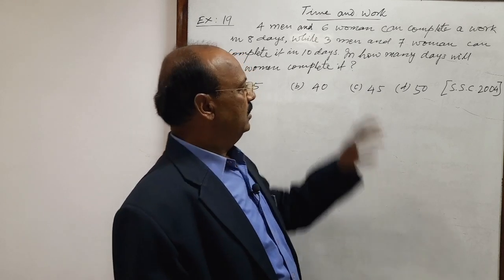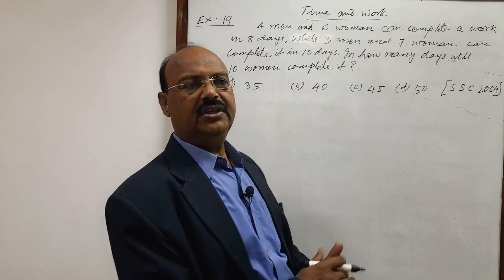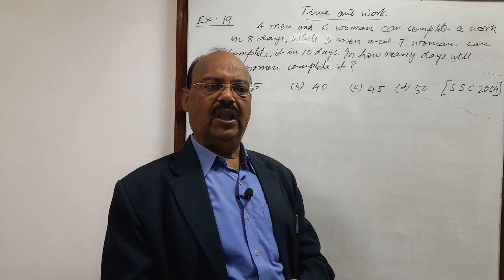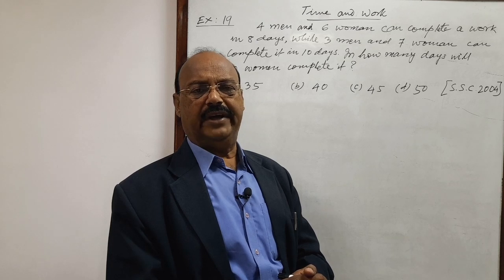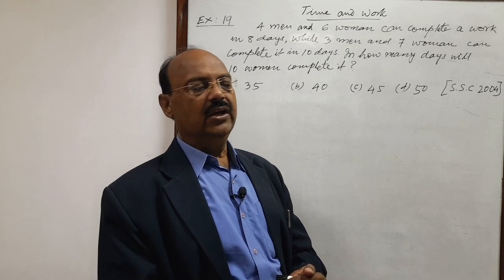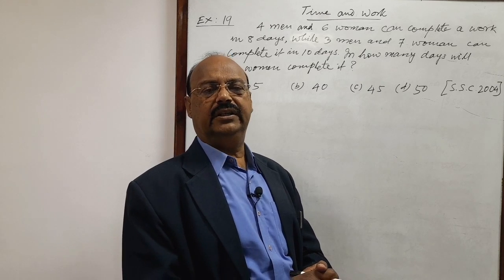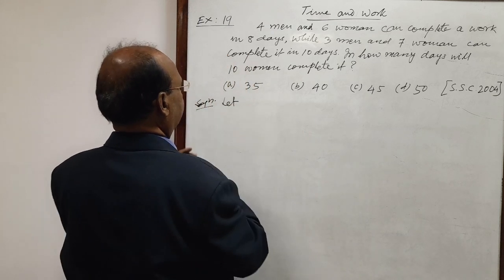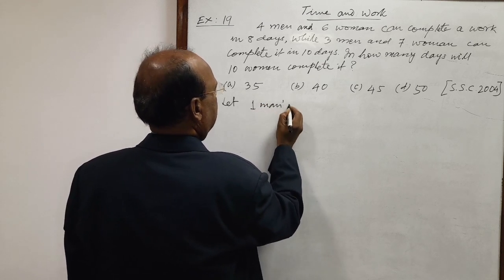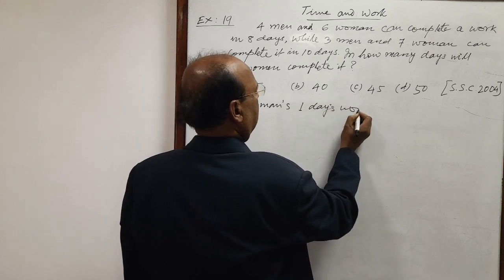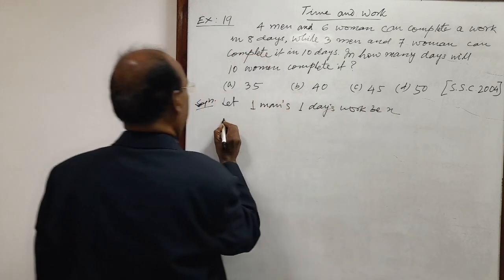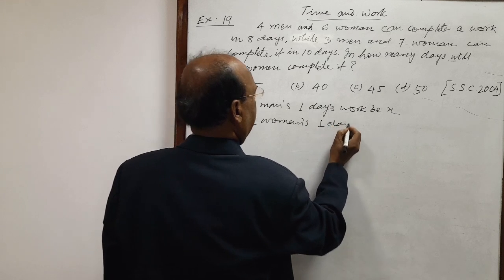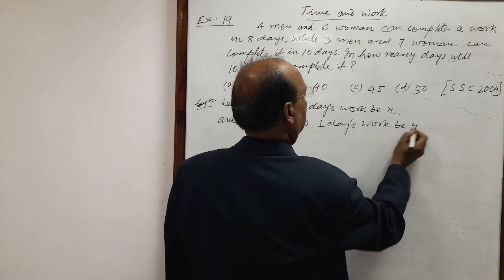Generally in such type of pattern of equation, we make two equations in terms of two variables x and y. And by solving these two equations, we get the values of x and y and we can calculate the answer very easily. We need to understand how to make these two equations. First of all, let us suppose that one man's one day's work be x and one woman's one day's work be y.